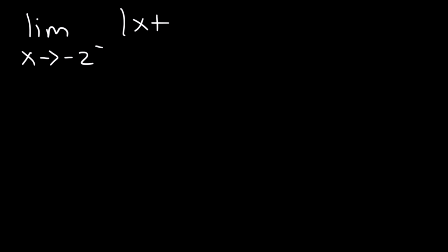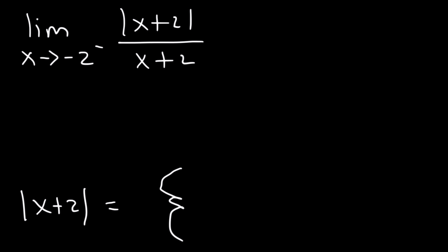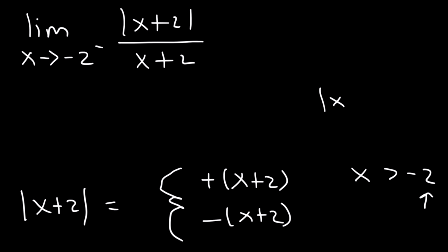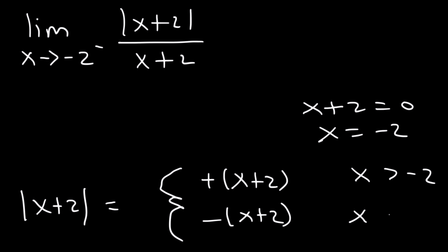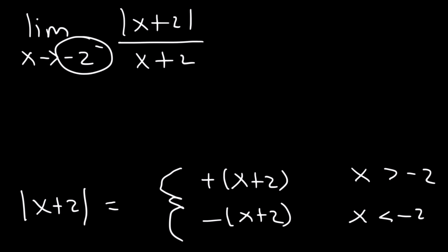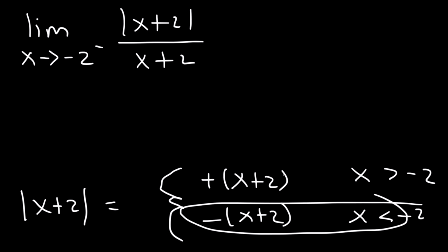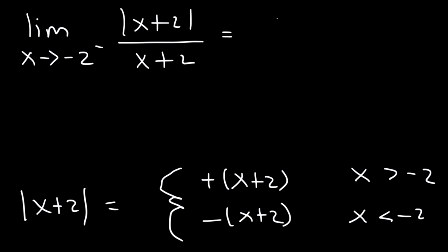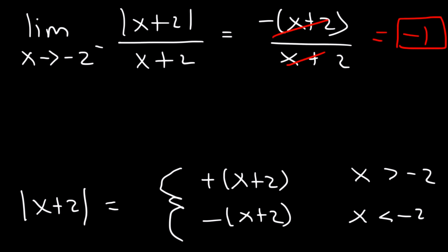Now if you want to do it another way, you can write a piecewise function. The absolute value of x plus 2 equals x plus 2 when x is greater than negative 2 — found by setting the inside, x plus 2, equal to 0 and solving. When x is less than negative 2, you use the negative version. Since we're approaching negative 2 from the left, x is less than negative 2, so we use negative x plus 2 divided by x plus 2, and these two cancel, giving us negative 1.